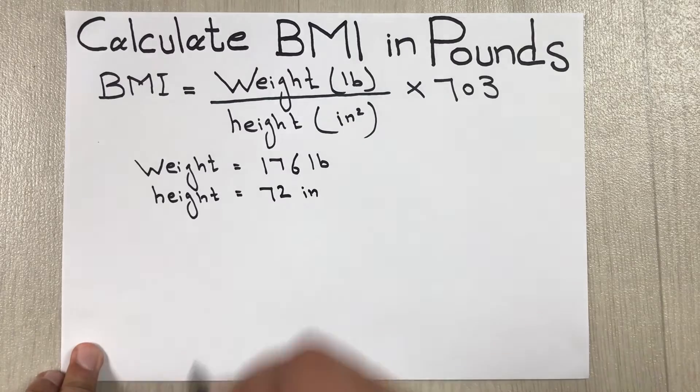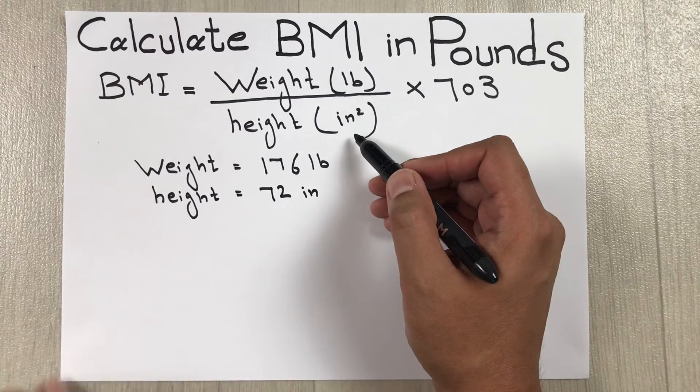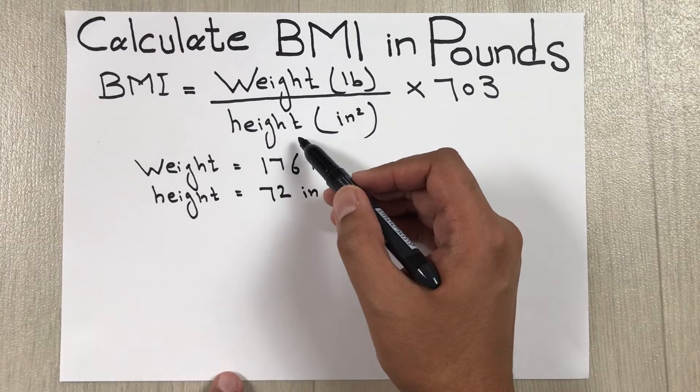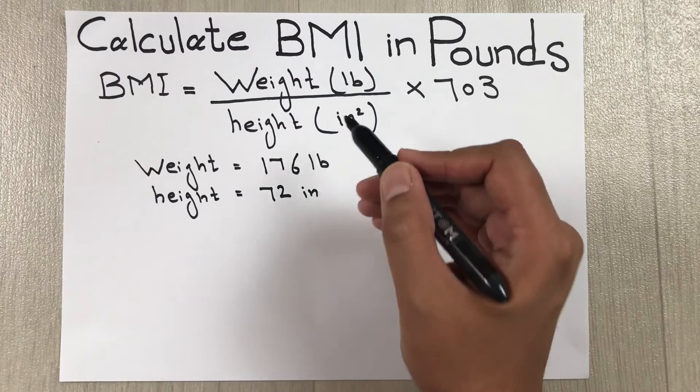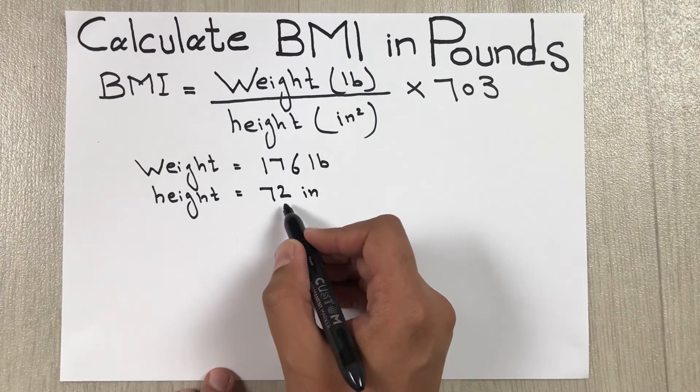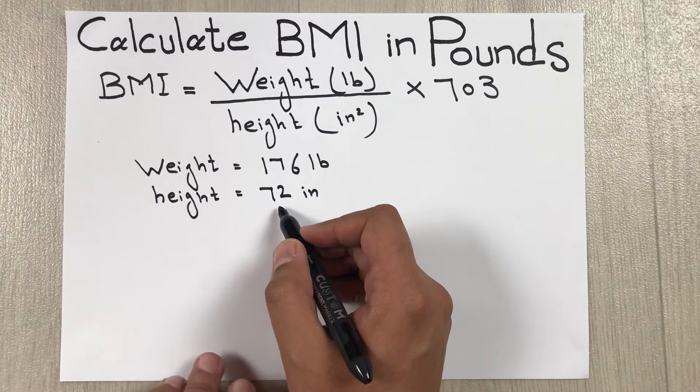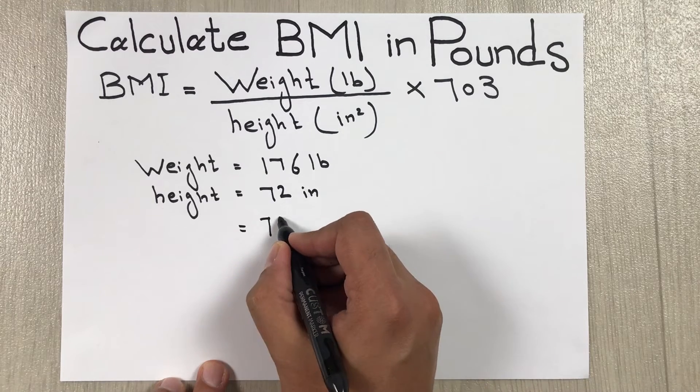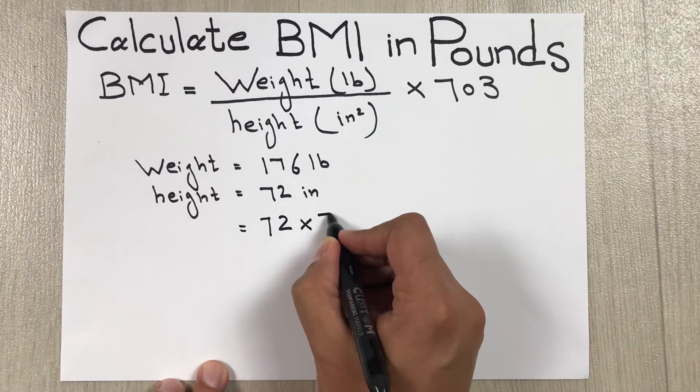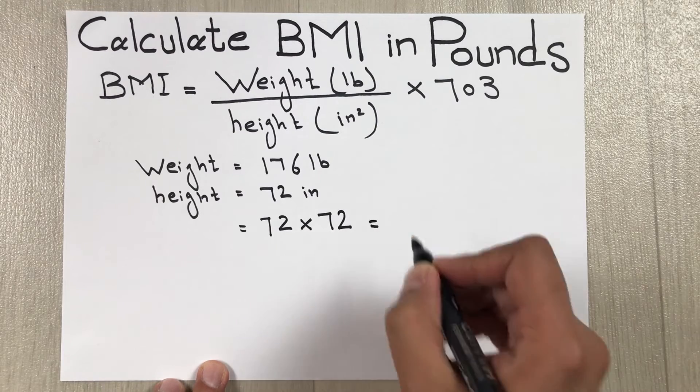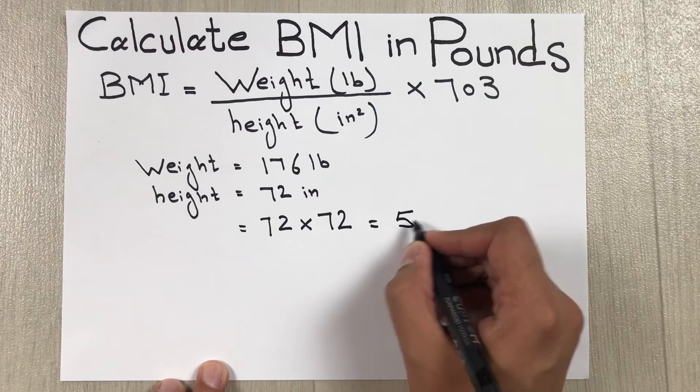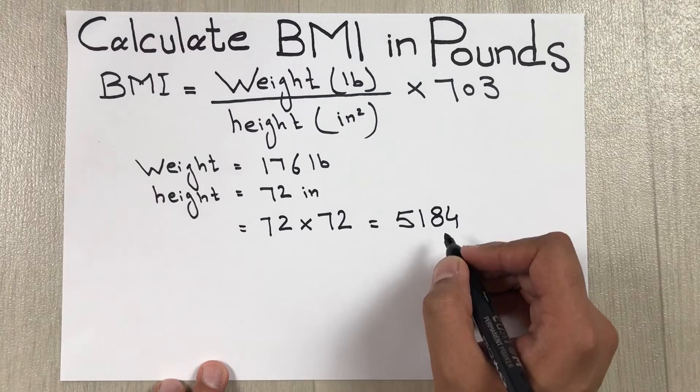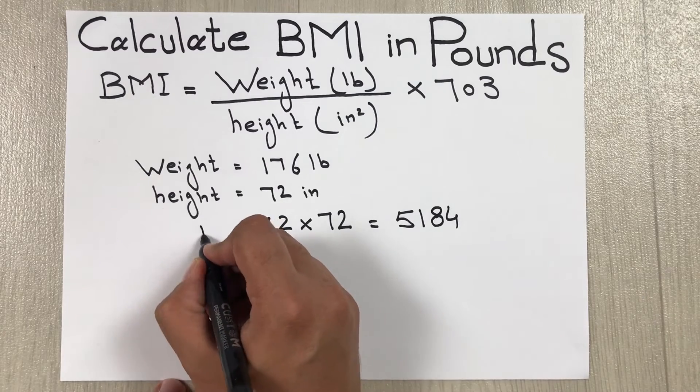As you can see, the formula for BMI is weight divided by height, but height is in inches squared. So what we will do is we have 72, so we multiply it two times. To convert it to inches squared, 72 multiplied by 72. Then we will get our answer which is 5184. So now this is in inches squared.